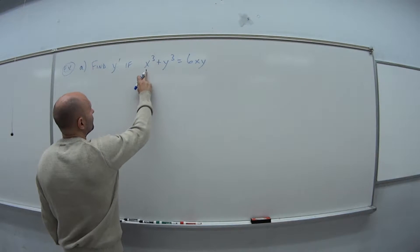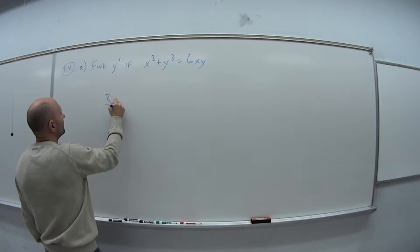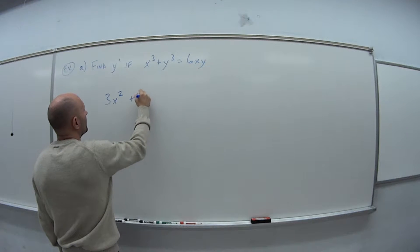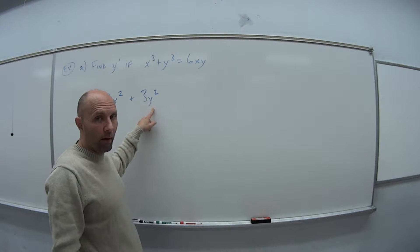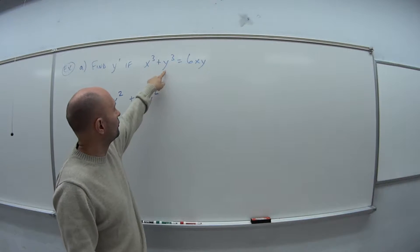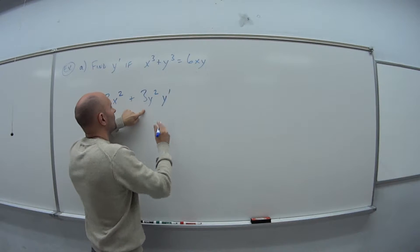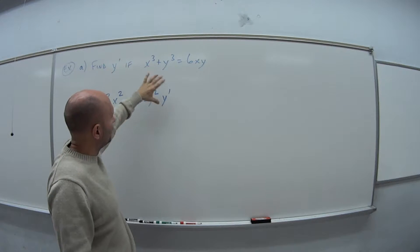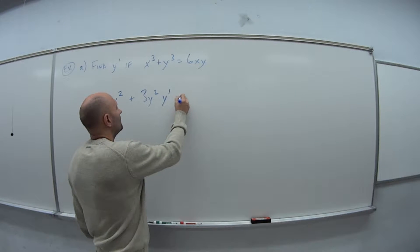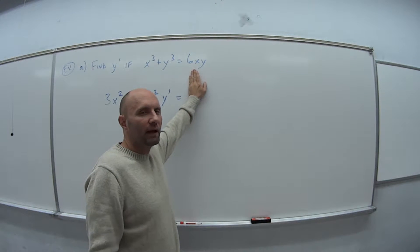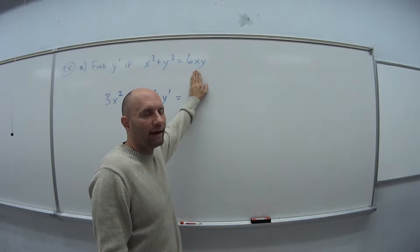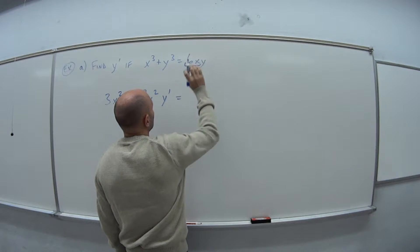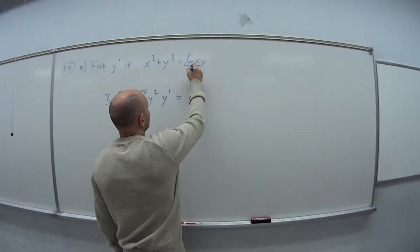So derivative of x to the third is 3x squared. Derivative of y to the third is 3y squared. But I took the derivative of a term with y, so I need to add on the y prime. If this said find dy over dx, then that's what we would put there instead. And then equals, what do we have here? 6 times x times y. It's a product rule. So we can put the 6 with whatever we want — I'm going to put it with the x, so this is like our first part.